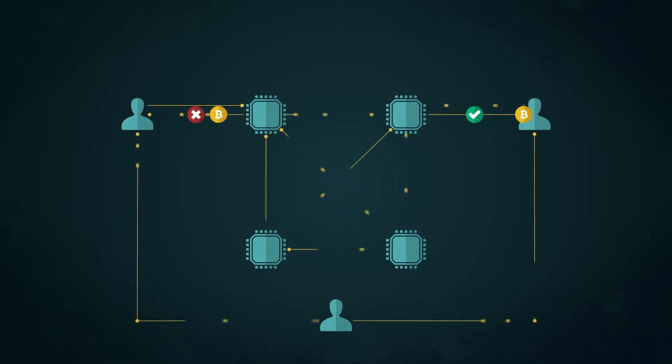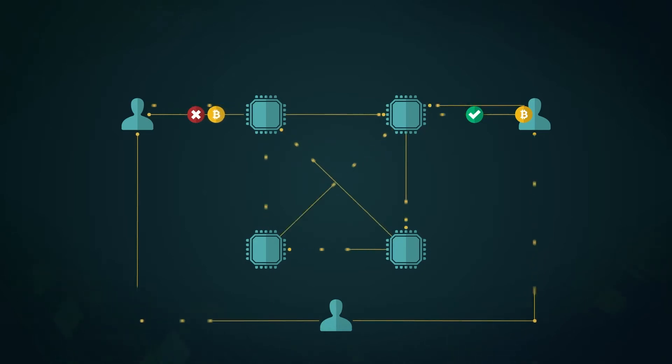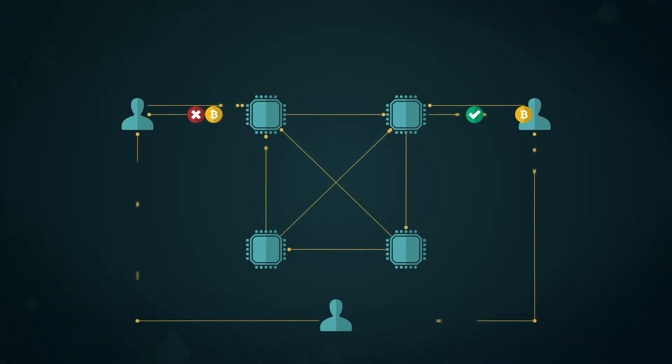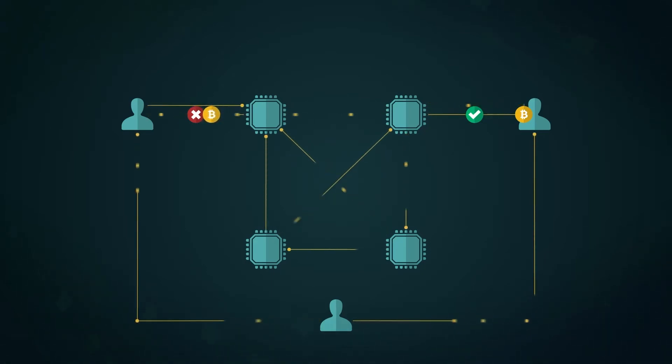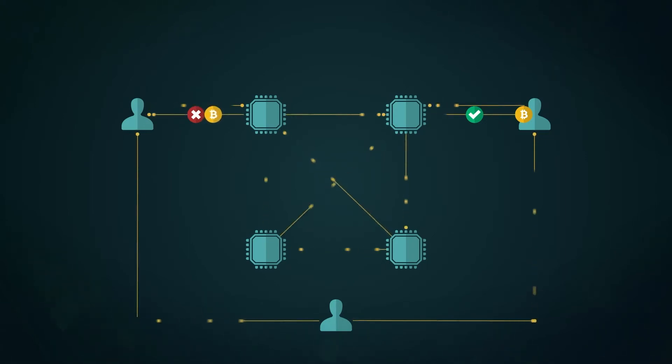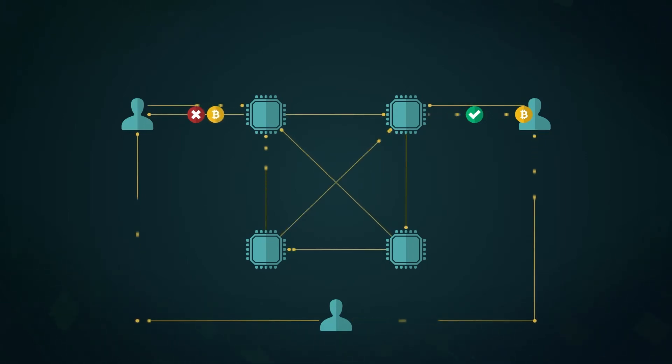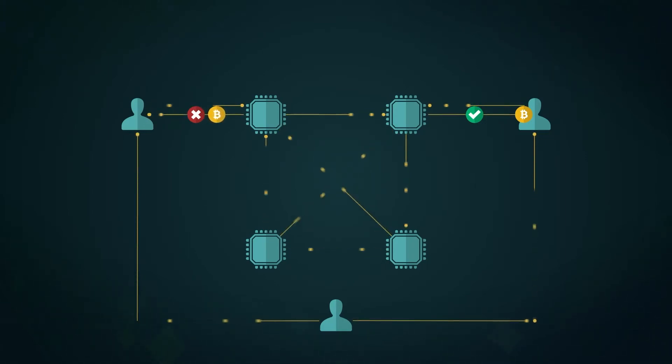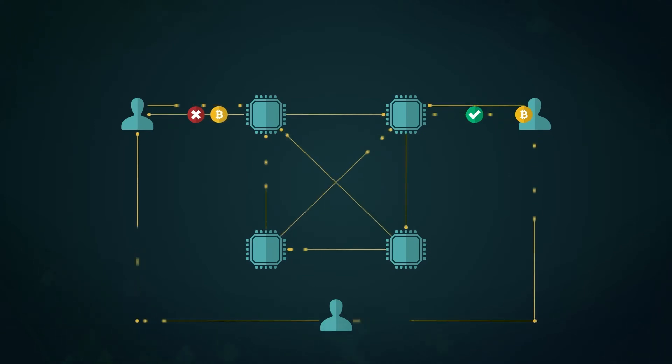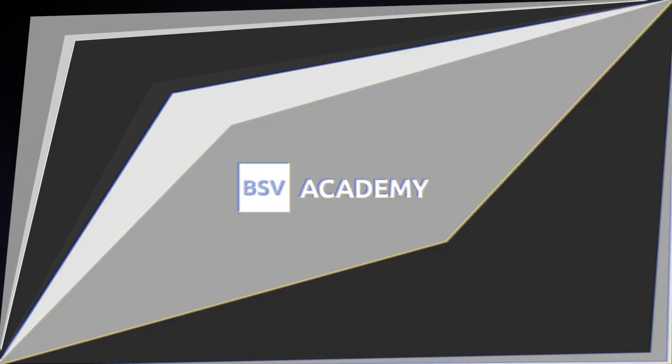Since all transactions are publicly broadcasted, nodes accept the first seen transaction using the specified coins as the proper transaction and reject additional spending attempts as double spends. Even in the case of two identical transactions reaching the network simultaneously, the transaction to reach the nodes with the most combined hash power first is considered the valid transaction.